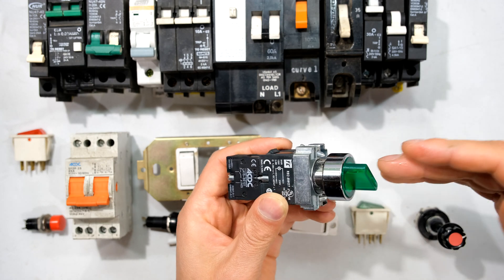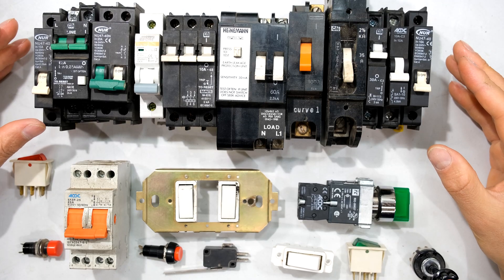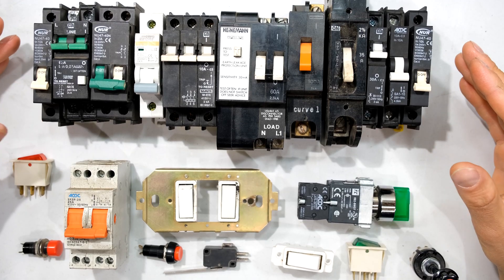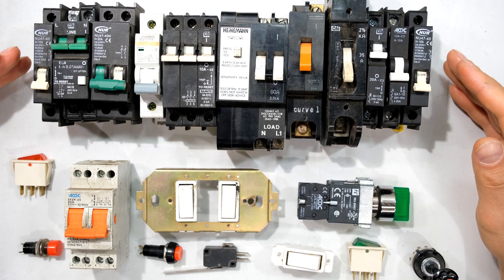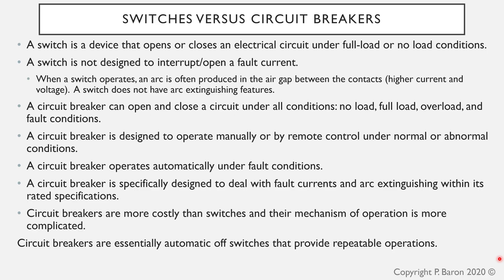A switch, on the other hand, has only manual operation. If the current exceeds a certain amount, all that will happen is the switch will burn out — it is unable to automatically open the circuit. Some circuit breakers can be remote controlled, meaning you can initiate a trip from a remote location. A circuit breaker is specifically designed to deal with fault currents and arc extinguishing within its rated specifications.